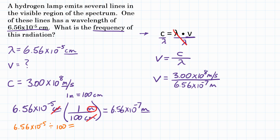Now we have everything to solve for frequency. Let's look at our units: on top we have meters per second, and on the bottom we have meters, so meters cancels out, leaving us with 1 over seconds, or per second. That can also be written as seconds to the negative 1 power, and another way to write that is hertz, which is generally what we use to talk about frequency.